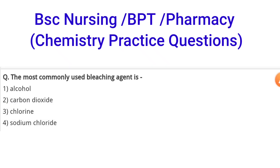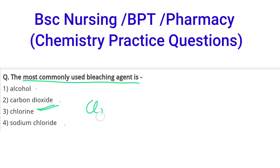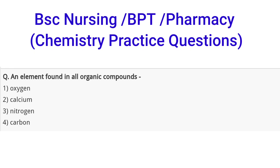The next question is: the most commonly used bleaching agent is — options are alcohol, carbon dioxide, chlorine, or sodium chloride. The correct option is 3, that is chlorine. Chlorine is what we call the bleaching agent.